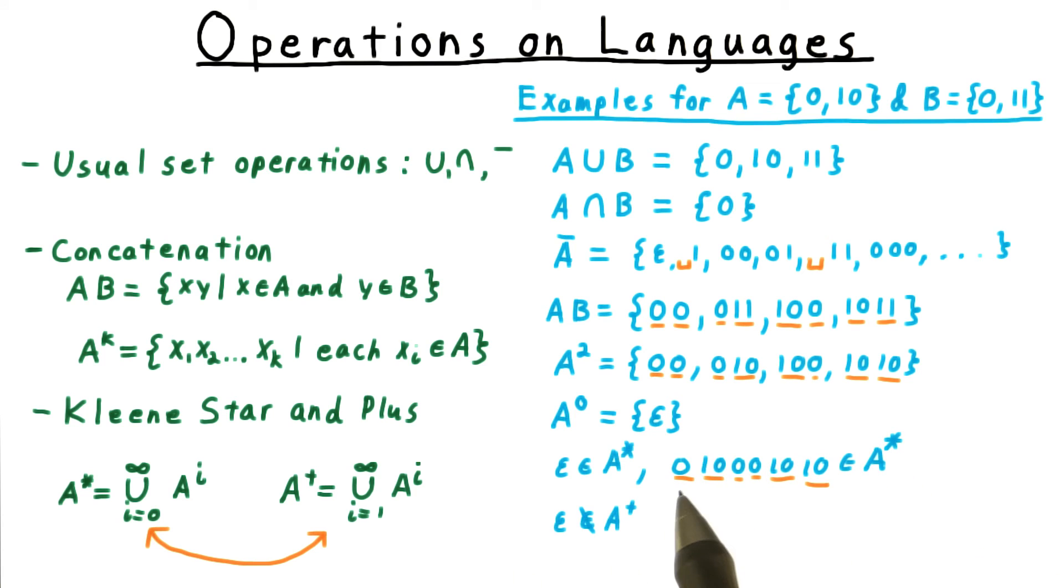So, for example, this string here is in A star. There's a way that I can break it up so that each part is in the language A. Note that A star doesn't include infinite sequences of symbols. Each individual string from A must be a finite length, and you're only allowed to concatenate a finite number of those together.